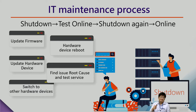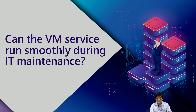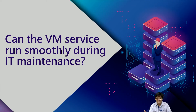The cycle is: first shut down, then bring it online, then shut down again, then bring it online again. We would like the VM service to keep running smoothly while also being able to do maintenance on the virtual machine. So what should we do?